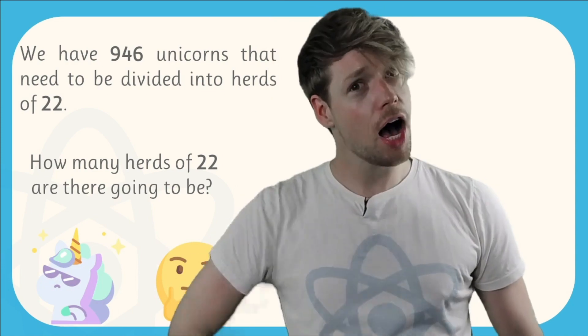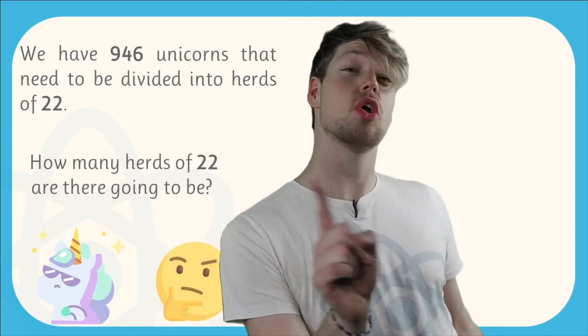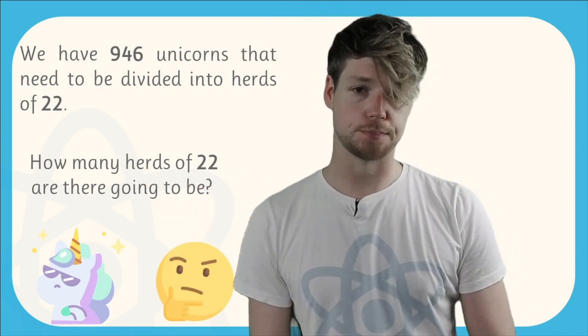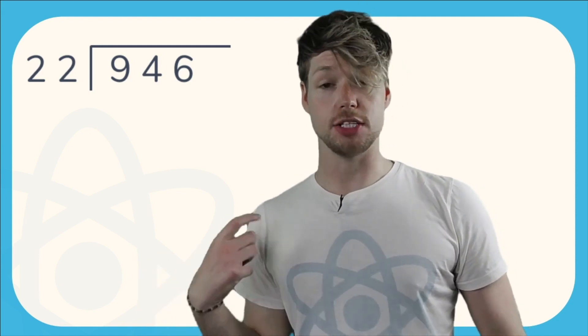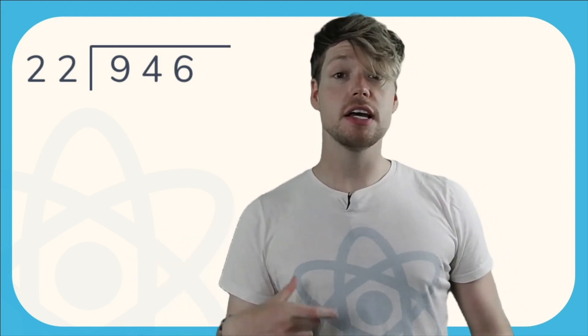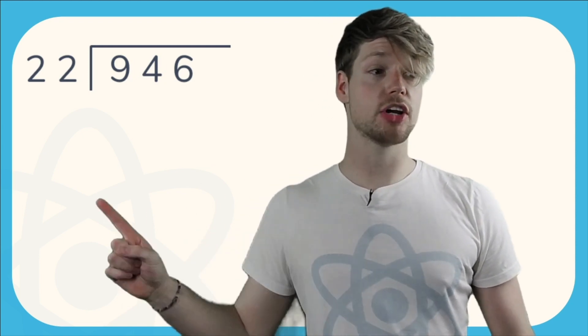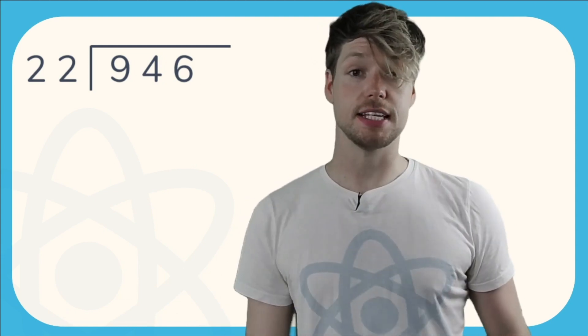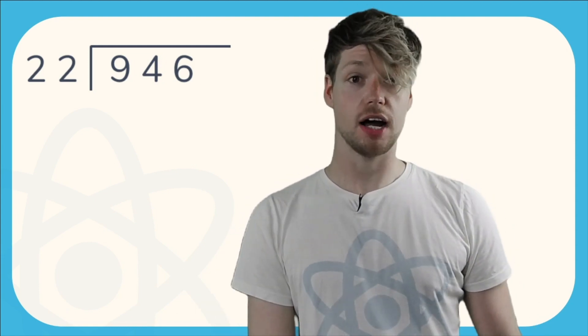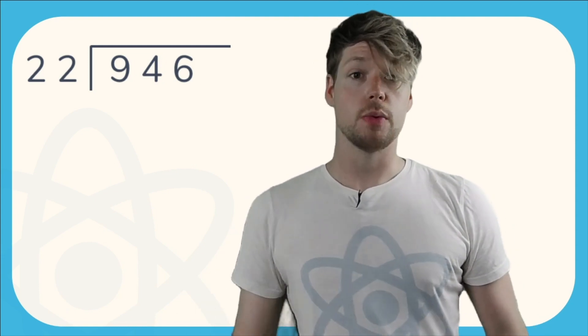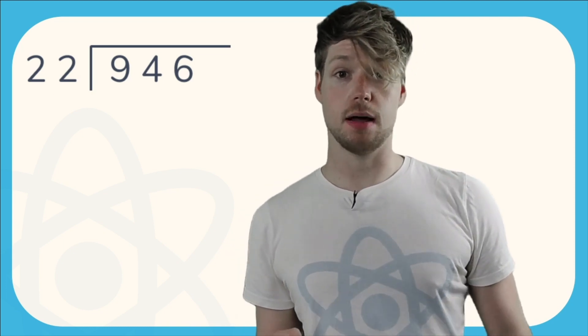What we want to work out is how many herds of 22 are there going to be. I don't know yet, I'm going to have to use long division to get to the answer. To do this we're going to set up an equation that looks a bit like this. We need to do 946 divided by 22. So the divisor is 22, that's the number we are dividing by, and it goes on the left on the far side. 946 is the dividend, it is the number we are dividing.